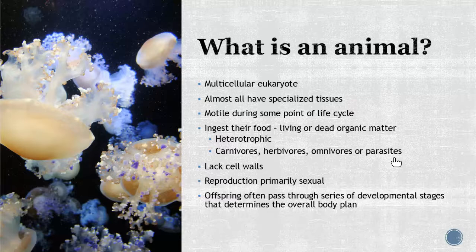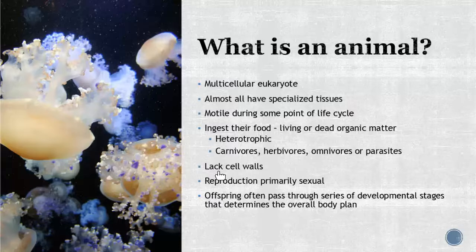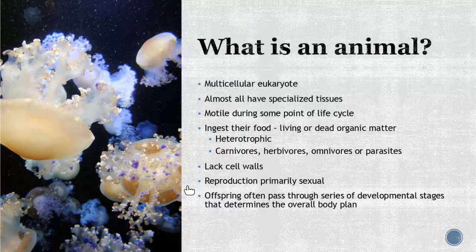We're going to go through the different phylums and talk about key characteristics throughout this unit. We are animals — a key difference between animals and plants is the cell wall. Animals do not have cell walls — that is a big difference. We've talked about reproduction in the last couple units, and you're going to see some of the simpler animals use asexual reproduction.